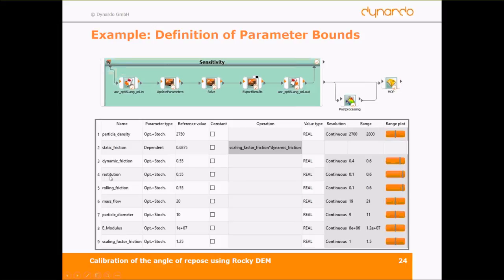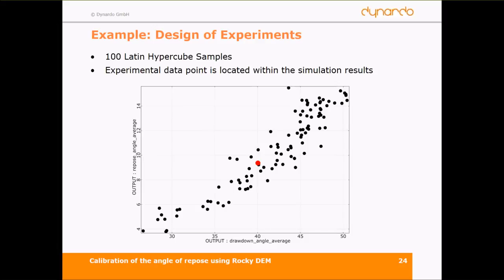In our example, we have these eight parameters already shown, plus one new parameter: the scaling factor for friction. We decided that static friction must be bigger than dynamic friction, so static friction is a dependent parameter solved by the equation: dynamic friction times the scaling factor. This ensures static friction is always bigger. So we have eight optimization parameters and one dependent parameter, and we ran 100 solver calls in the design of experiment.